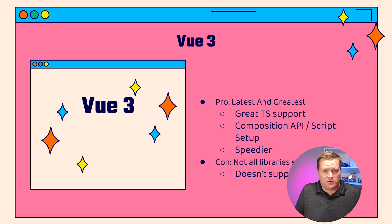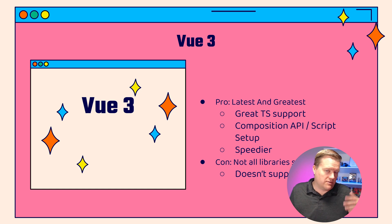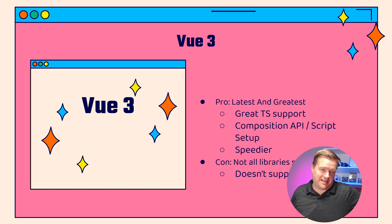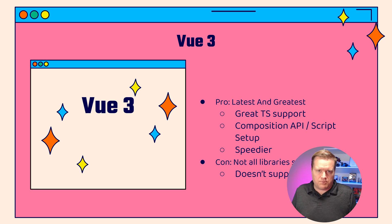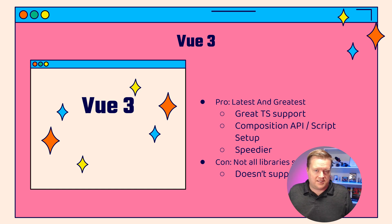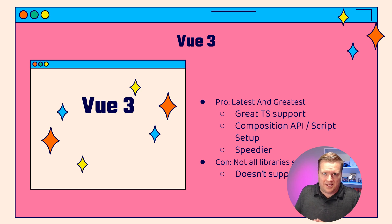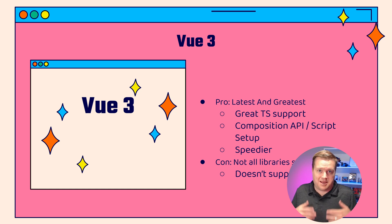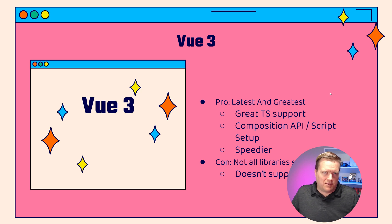Vue 3 gives you the latest and greatest. It has great TypeScript support — if you're using TypeScript, you want to use Vue 3, not Vue 2. It has the Composition API and a really cool new feature called Script Setup, which I covered in my previous video. It's also a little bit faster than Vue 2. The cons: not all libraries support it yet — Vue Devify has a beta version, and even Nuxt hasn't fully supported Vue 3 yet. Also, they're really dropping support for IE 11, so if that's important to you, you may not want to go with Vue 3.